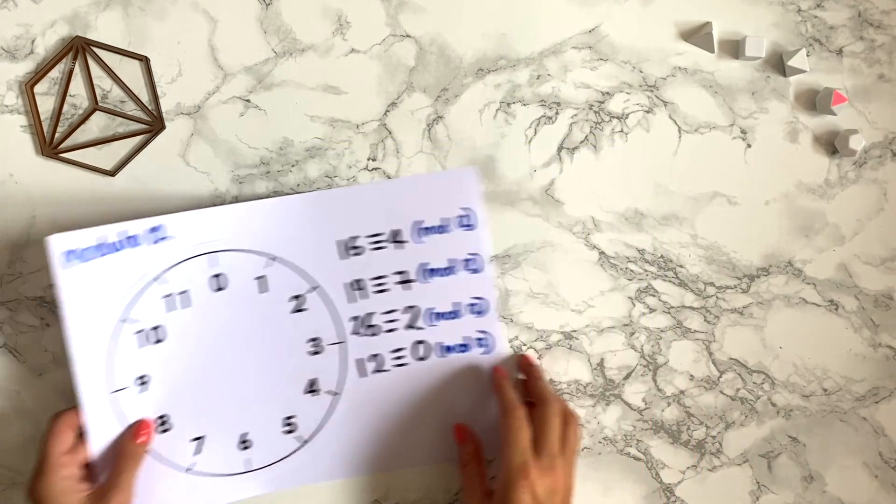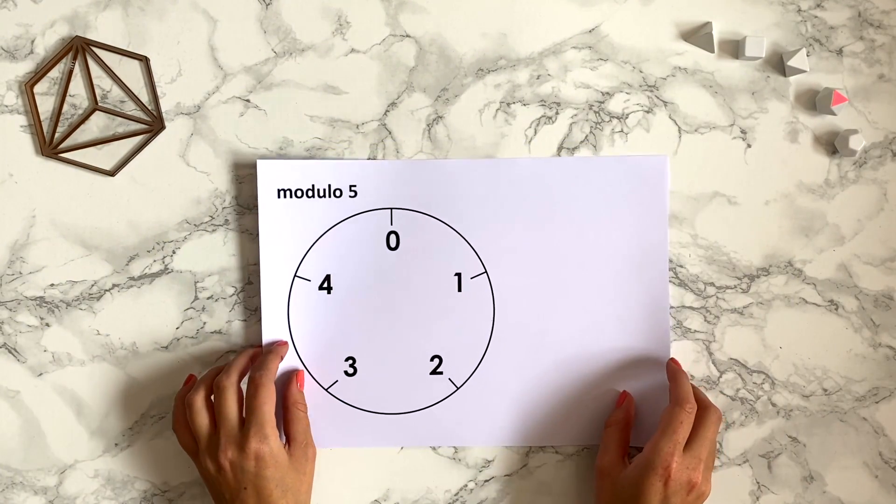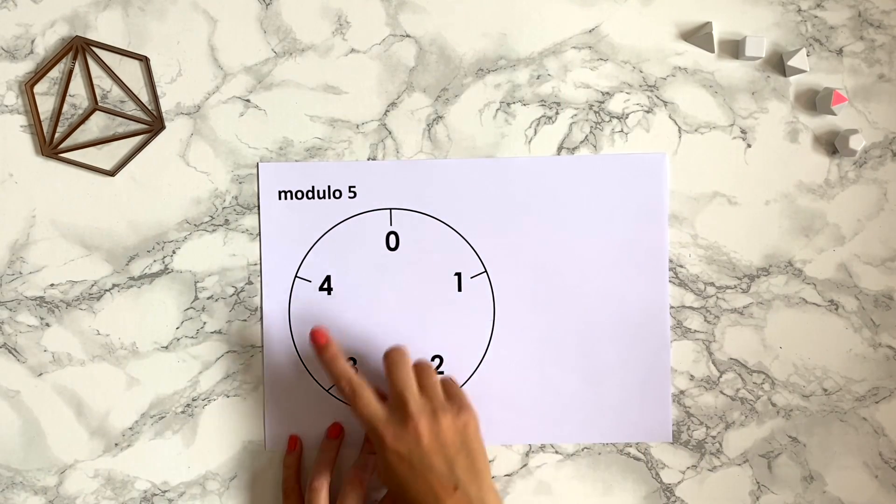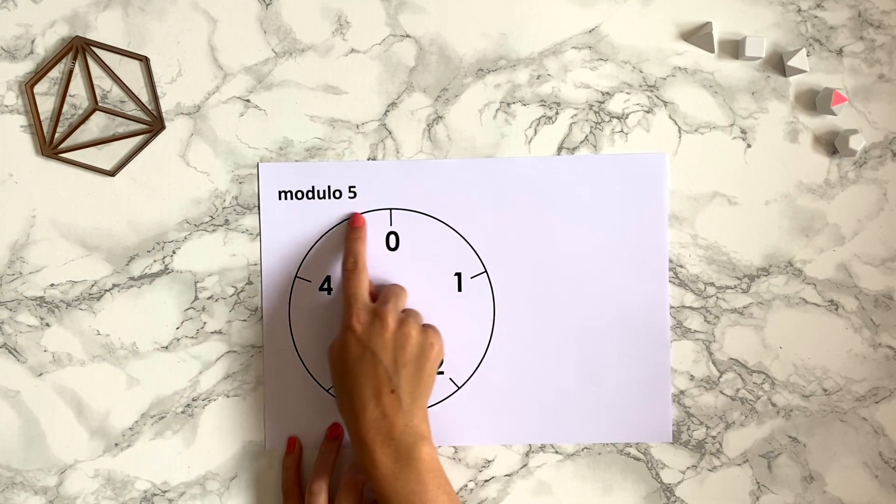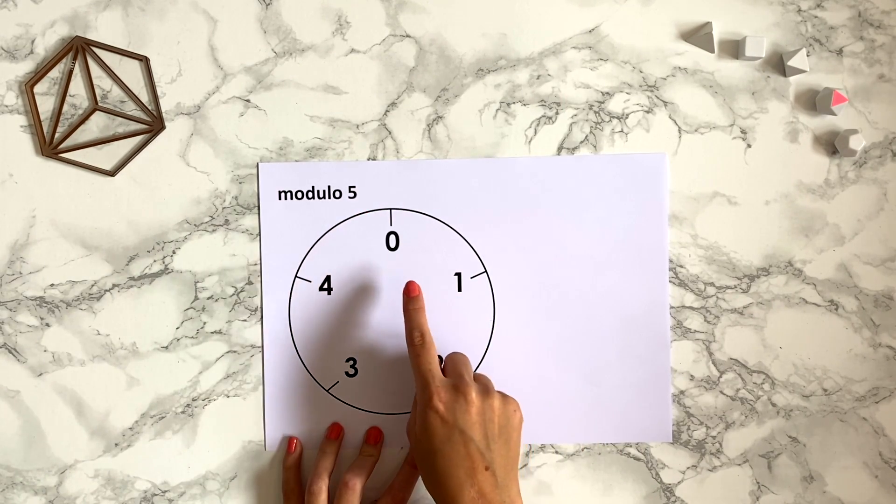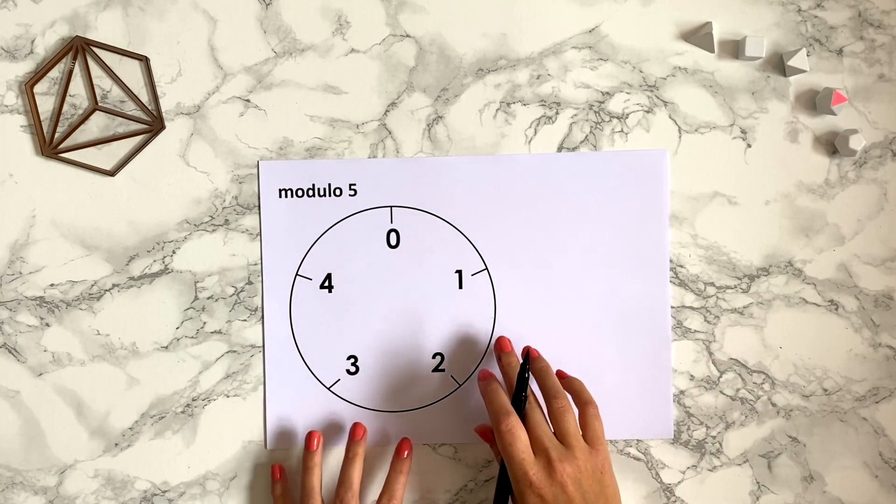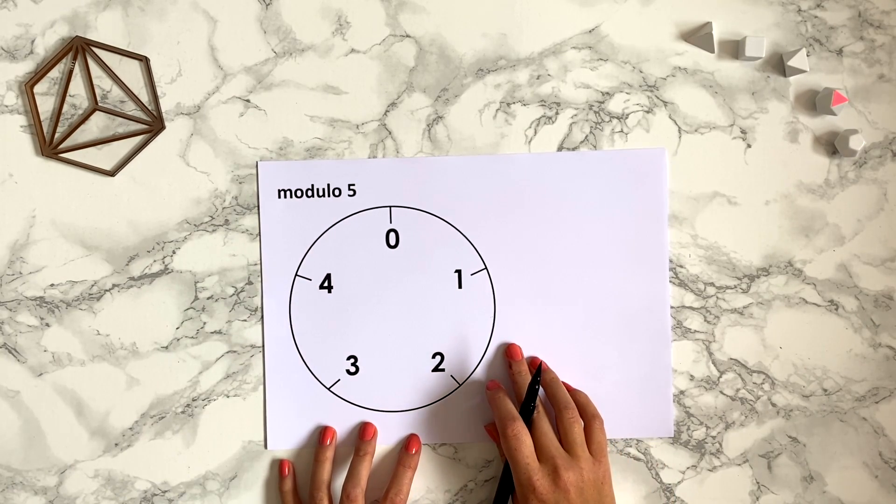What happens if we change the number of hours on the usual clock face? Here I've got a 5 hour clock face, so this is working modulo 5, and remember we put a 0 at the top not a 5. What would 6 o'clock be on a 5 hour clock?